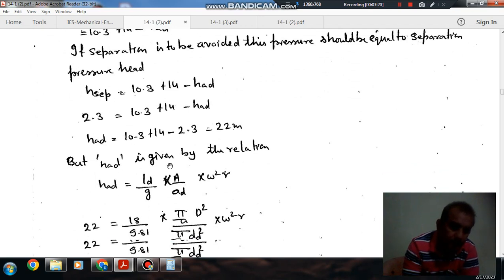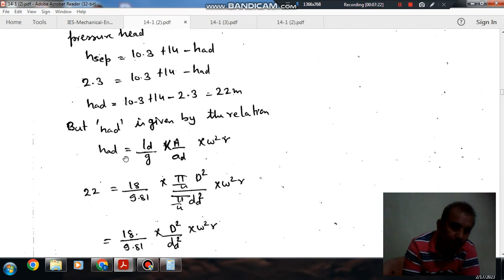So HD comes out as 22 meters. And again, using the same formula now, it is for delivery pipe. This is AD, A is area of plunger.